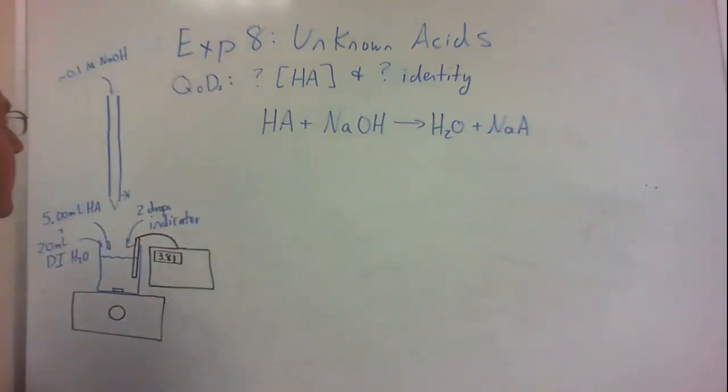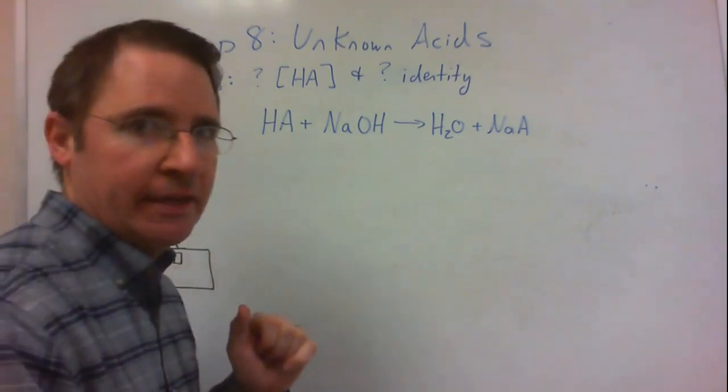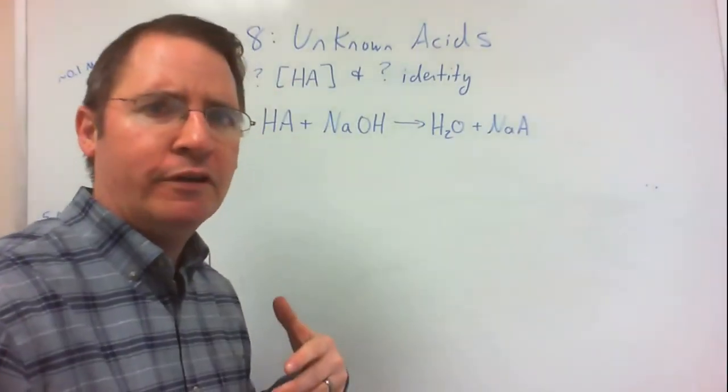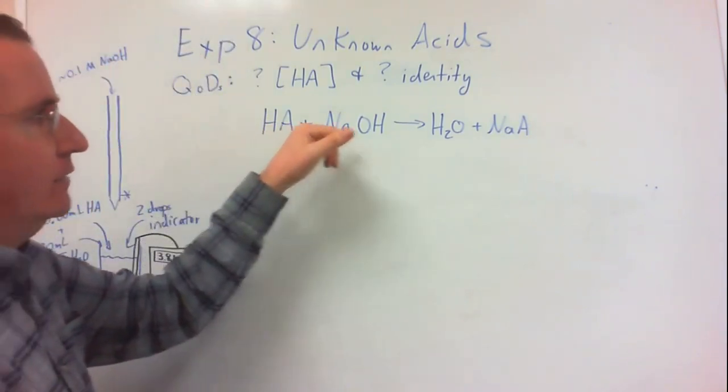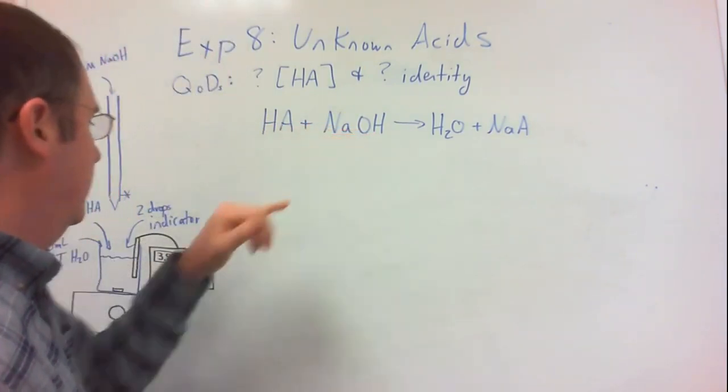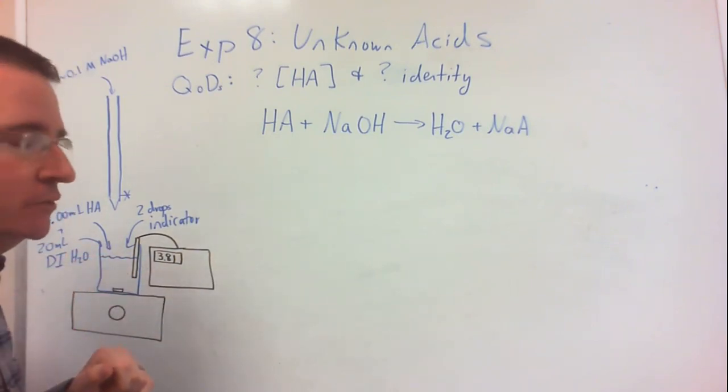Our setup is that we'll fill our burette with approximately 0.1 molar sodium hydroxide, and then in our beaker where the titration will occur, we'll have 5 milliliters of a weak acid solution, 20 milliliters of deionized water, and two drops of an indicator of our choice. In order to be able to follow the chemistry of what's occurring as the weak acid reacts with hydroxide, we'll have a pH meter and a pH electrode inserted into our solution.